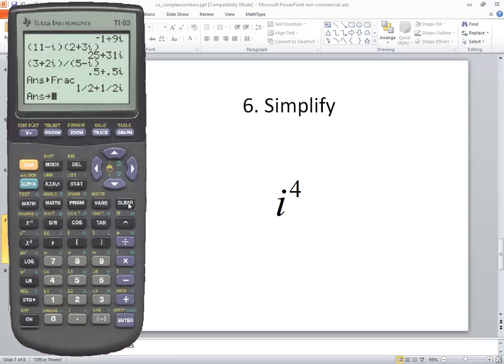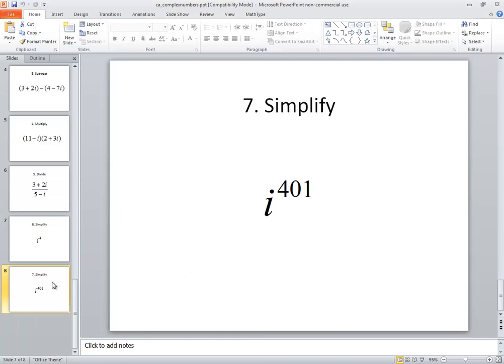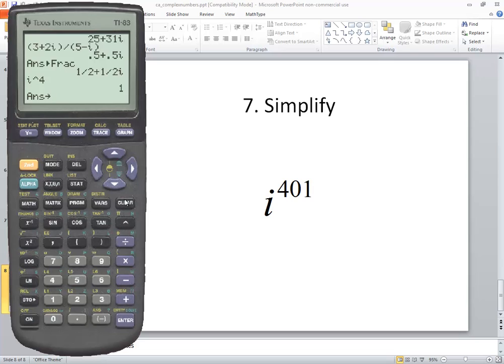Now i to the fourth. Well, if I do second decimal for the i and then I do caret four and press enter, then we get one. And that'd be our answer. But let's look at i to the four hundred and first power, see what it gives us there. So I'm going to do second i for the decimal, caret four hundred and one, and press enter.